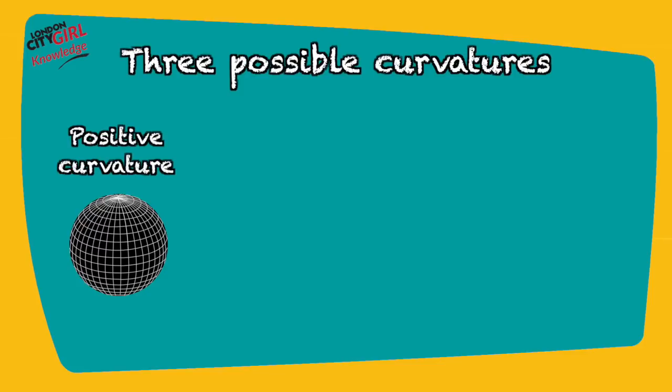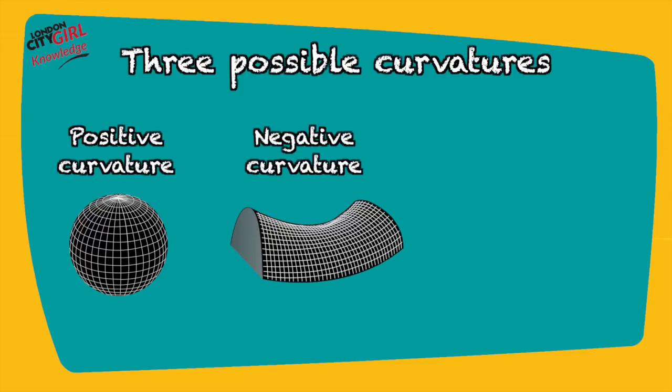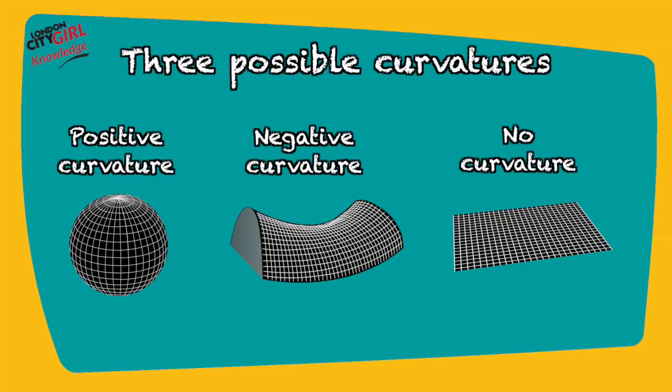One, positive curvature. Two, negative curvature. Or three, no curvature at all, i.e. be flat.